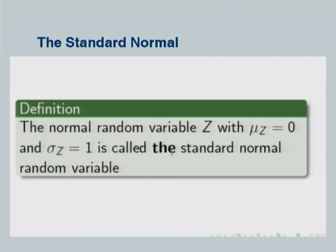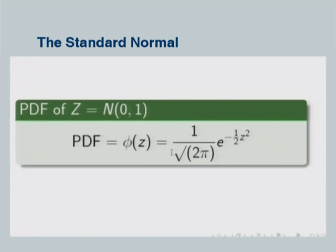There is only one standard normal random variable — you cannot have two standard normals. We continue by looking at the density function and the distribution function, which we can derive from the definitions of the same functions for the normal random variable.